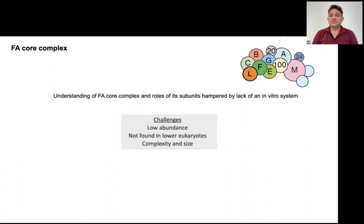So the major questions are: what is the role of other subunits of the FA core complex? And why do we need the FANCD2-FANCI heterodimer when monoubiquitination of FANCD2 is enough to drive the pathway forward? An understanding of how the FA core complex works is really hampered by the lack of a fully in vitro reconstituted system, and that was because of major challenges in establishing one. First, the complex is present in low abundance, making it difficult to purify from cells for structural and biochemical characterization. Second, this complex is not found in lower eukaryotes like yeast, which allow easy genetic manipulation. And finally, the complexity and size generate additional challenges to work with this particular complex.